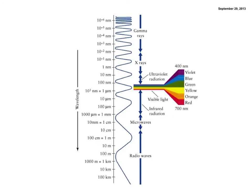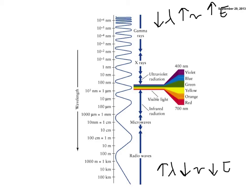Going back to the electromagnetic spectrum, the top was our short wavelength, high frequency end of the spectrum. And now with Planck's equation, the high frequency end also is the high energy end. That's why gamma rays and x-rays and even ultraviolet radiation are so dangerous — it's the high energy waves. Down at the bottom, you have your longer wavelength and lower frequency and therefore lower energy waves, and those tend to be not quite as dangerous.